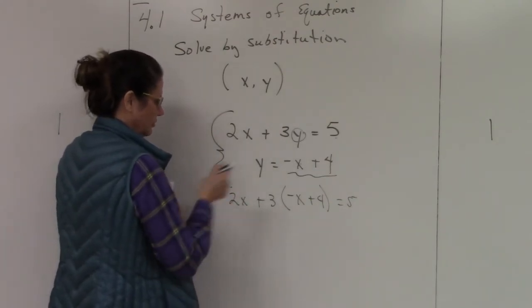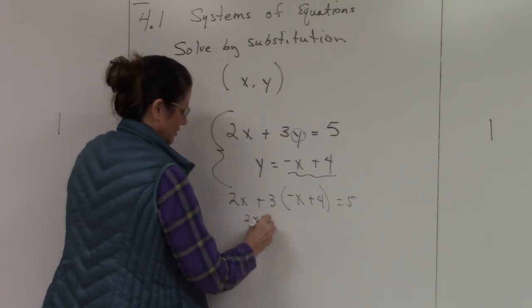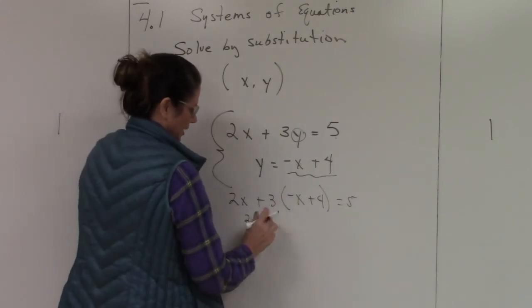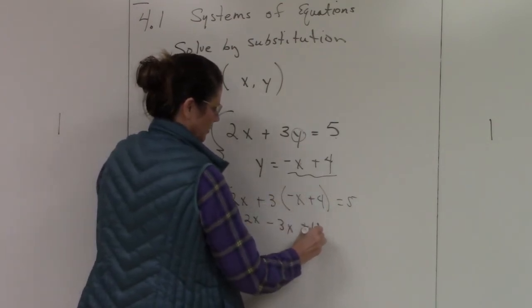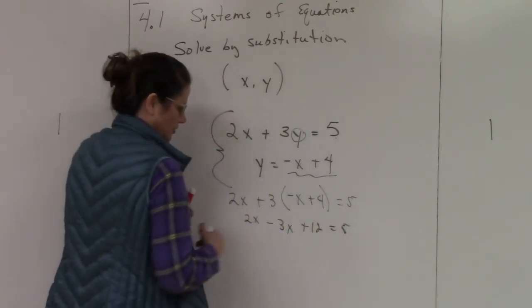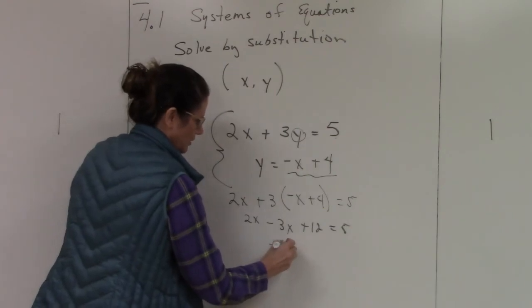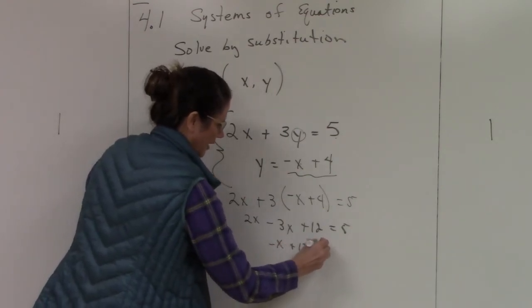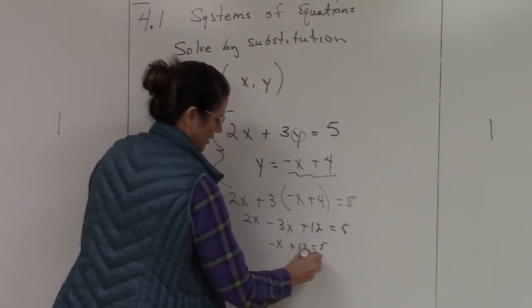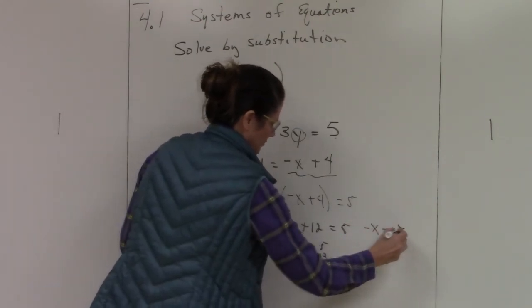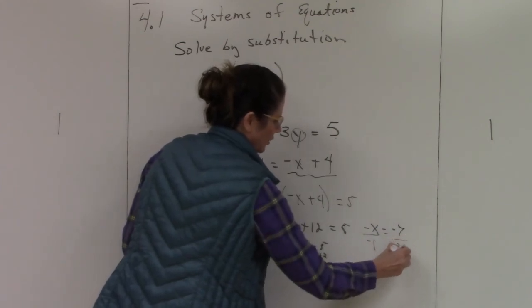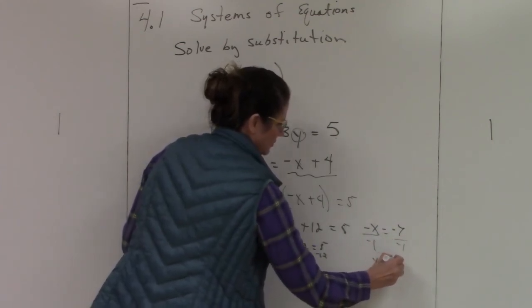Now I'm going to simplify this. 3 times negative x is negative 3x, 3 times 4 is 12. Now I'm just going to solve. So I have negative x plus 12 equals 5. I'm going to solve for x by subtracting 12, so I end up with negative x equals negative 7, and then divide by negative 1. So x is going to equal 7.